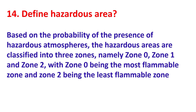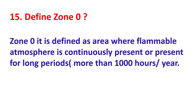Define hazardous areas. Based on the probability of the presence of hazardous atmospheres, hazardous areas are classified into three zones: Zone 0, Zone 1, and Zone 2 — Zone 0 being the most flammable zone and Zone 2 being the least flammable zone. Zone 0 is defined as an area where a flammable atmosphere is continuously present or present for long periods, more than 1000 hours per year.